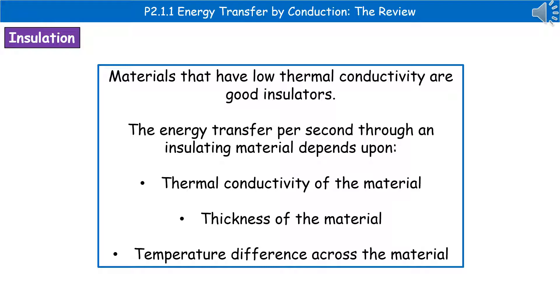Materials that have low thermal conductivities are the best insulators. When considering what affects the energy transfer per second through an insulating material, there are three things to consider: first, the thermal conductivity of the material; second, the thickness of the material; and third, the temperature difference across it.